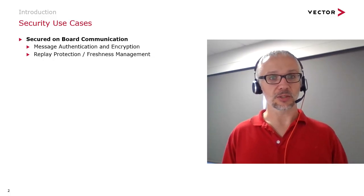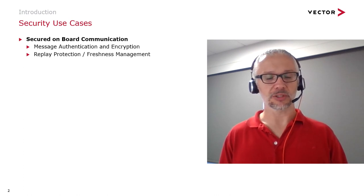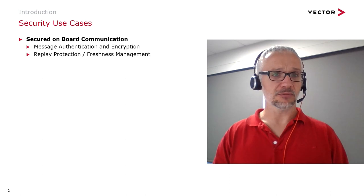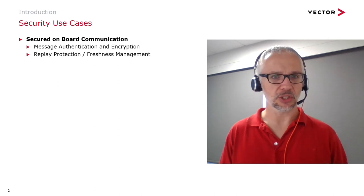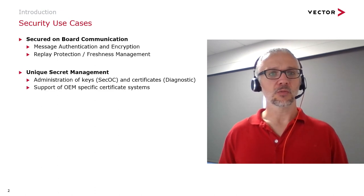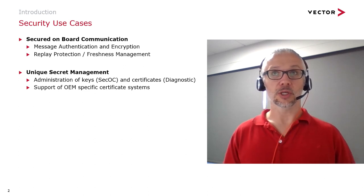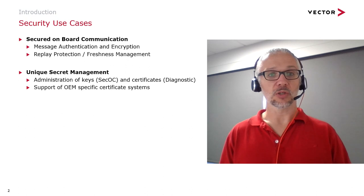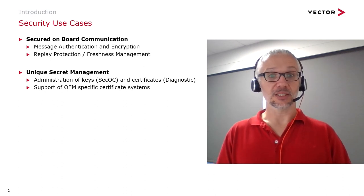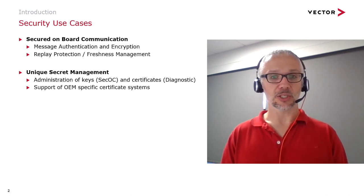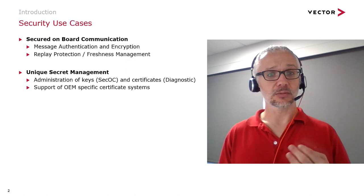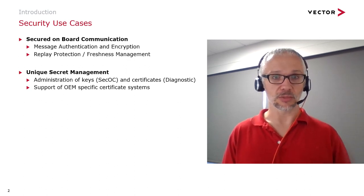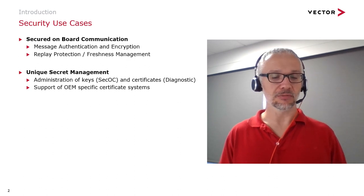We've talked about the use cases: we have secured onboard communication in AUTOSAR, which gives us message authentication and encryption. This gives us the ability to have protection against replay attacks and to make sure we have freshness management in ECUs, used for checking that data coming into them is fresh. We've also understood how we can work with public key cryptography, which has a concept of administration of keys and certificates, and how we can support specific systems for OEM and different manufacturer needs.